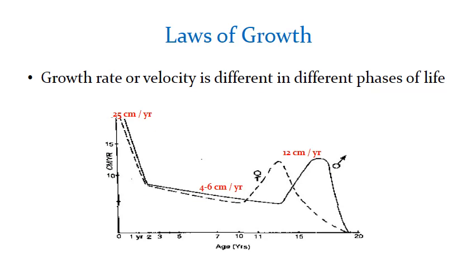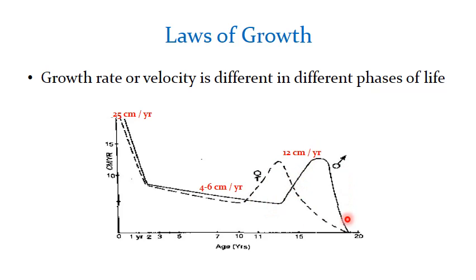Growth velocity is different in different phases of life. In the first year of life the child grows by about 25 centimeters, and this slows down in the middle childhood years to about 4 to 6 centimeters per year. Then comes the pubertal growth spurt at different times for males and females. During the pubertal growth spurt the average increment is about 12 centimeters per year.